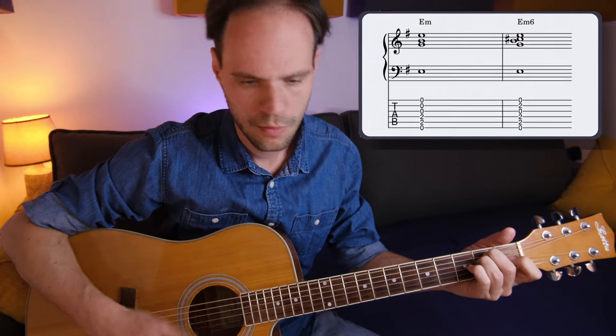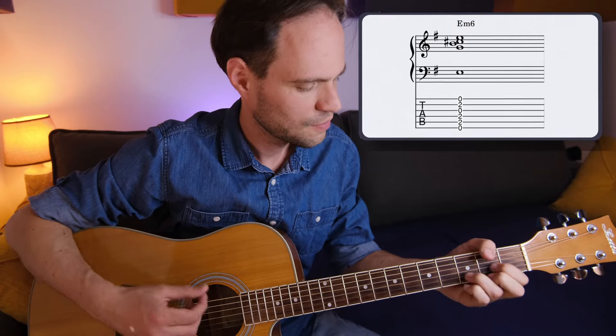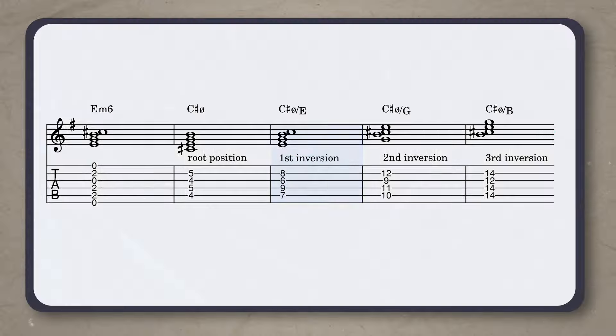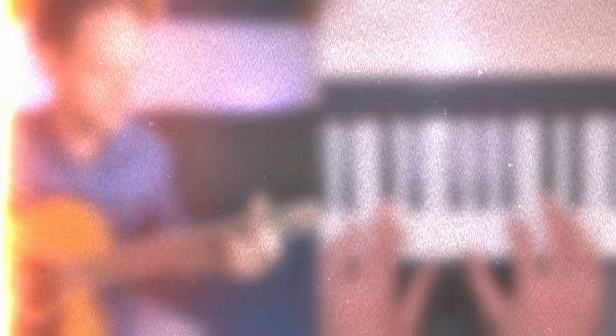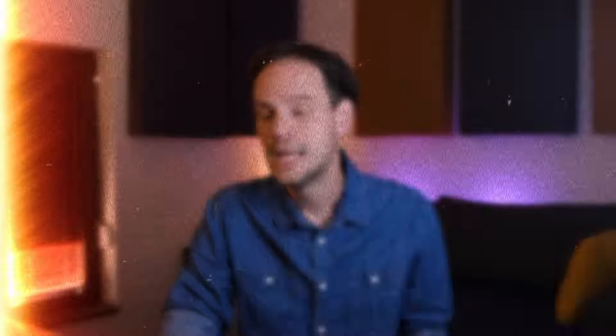The E minor chord turns into an E minor 6 chord, and this added C sharp gives all the flavor and dissonance. When we look at the tones in E minor 6, we can see that they are the same as a C sharp half-diminished chord, only in the first inversion. This diminished chord creates tension and wants to resolve to the chord half a step up, which is D major. So not only do these chords sound great, they also add richness to the song's harmonic structure.